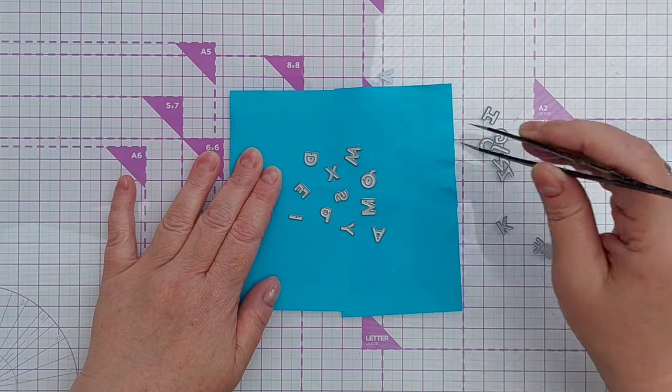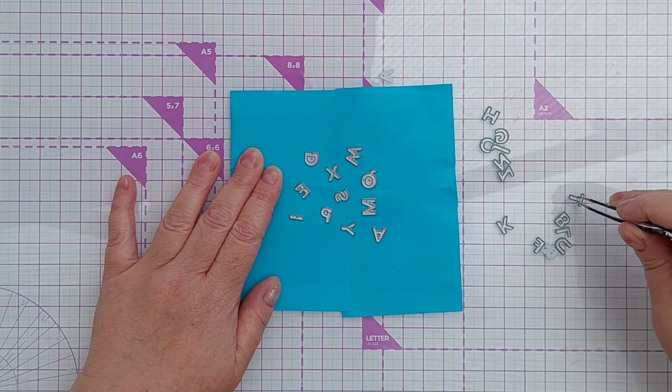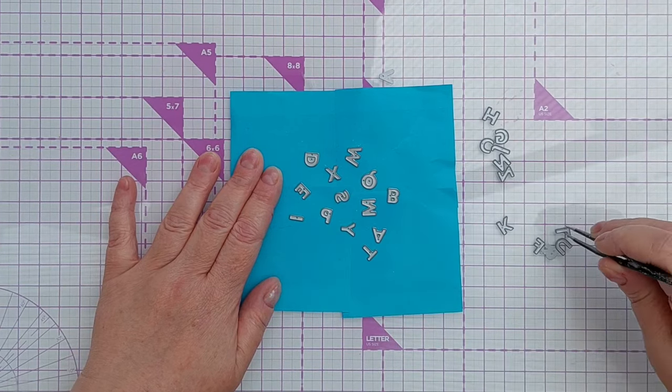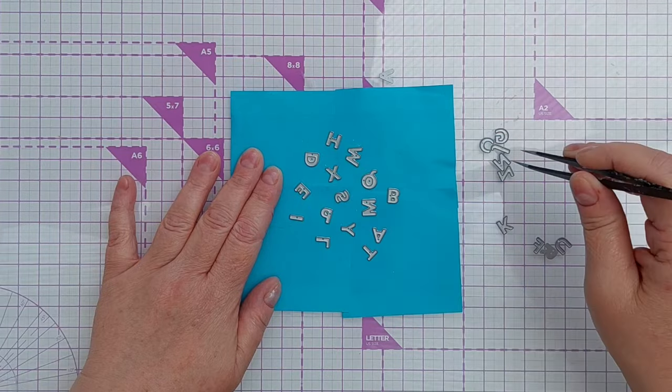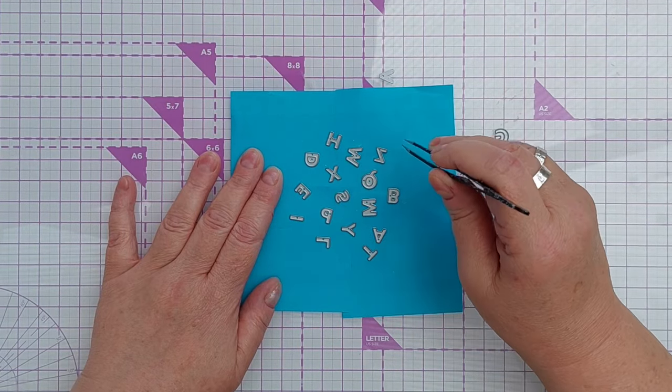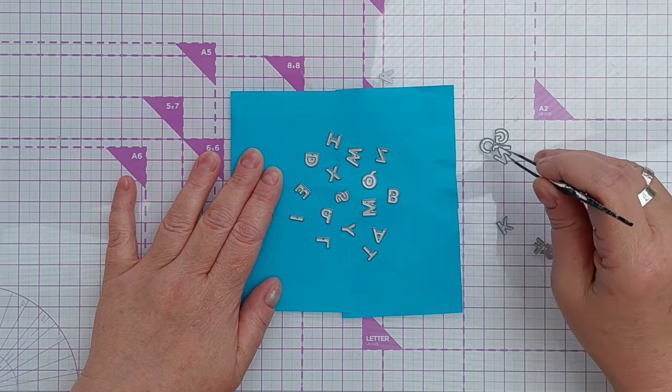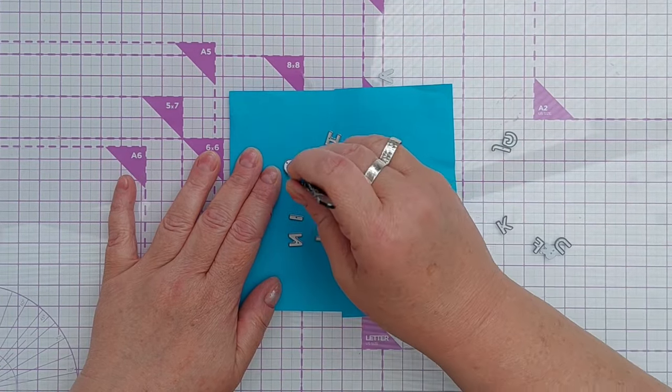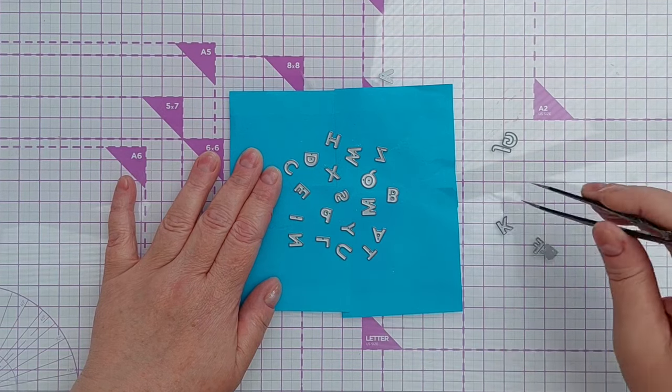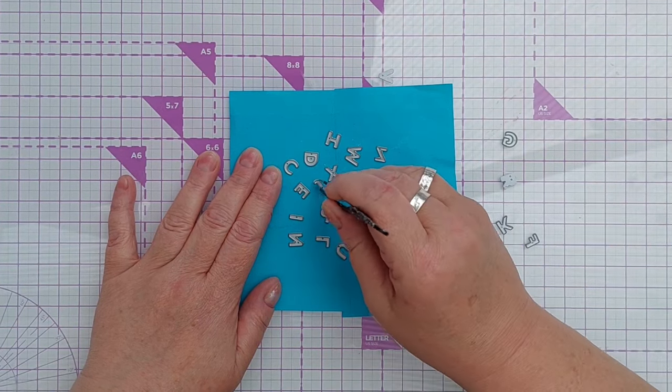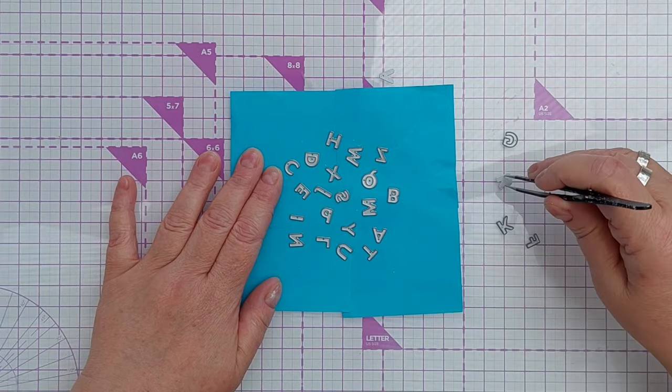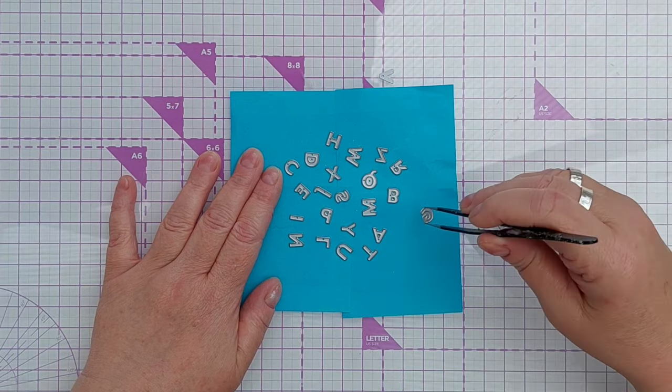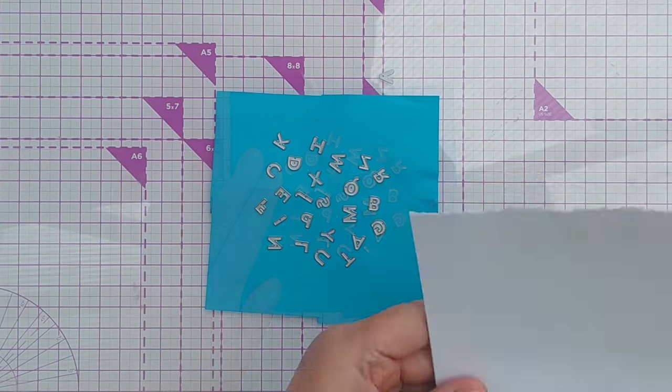So I've got my tiniest alphabet die set here and four sticky notes that I flipped sticky side up. I'm just arranging my dies cutting side up onto the sticky surface, and this is just going to keep all my dies together and stop them getting lost - because there's nothing worse than having an alphabet die set and having a critical letter missing.